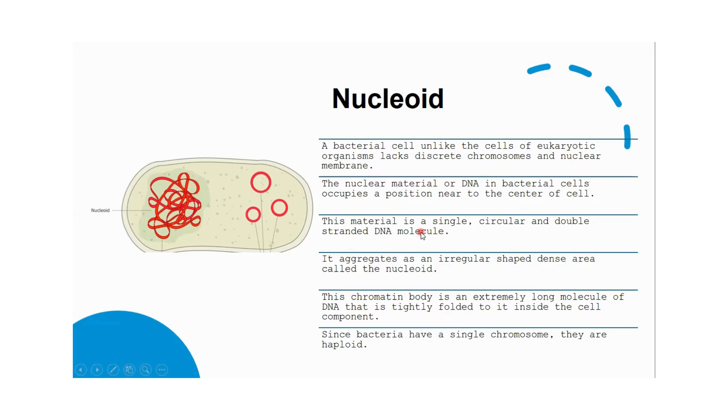This material is a single, circular, double-stranded DNA molecule. It aggregates as an irregular-shaped dense area called the nucleoid. This chromatin body is an extremely long molecule of DNA that is tightly folded inside the cell. Since bacteria have a single chromosome, they are haploid.